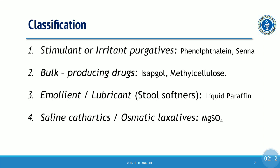The first class is stimulant or irritant type purgatives, for example phenolphthalein or senna. Next is bulk-producing drugs, for example isapgol or methylcellulose. The next class is emollient or lubricant, also called stool softeners, for example liquid paraffin, which is mineral oil. Last is saline cathartics, also called osmotic laxatives, for example magnesium sulfate.